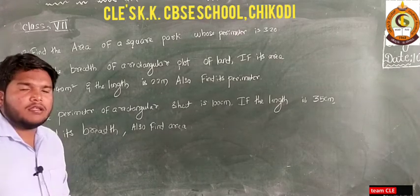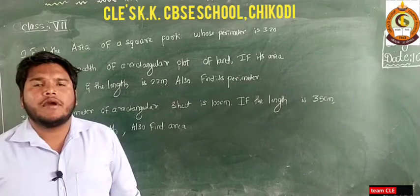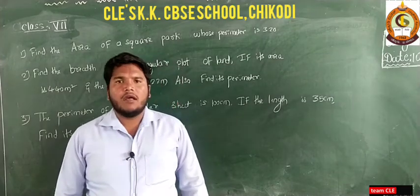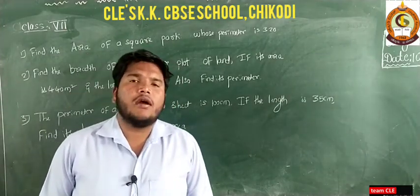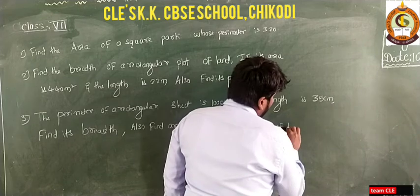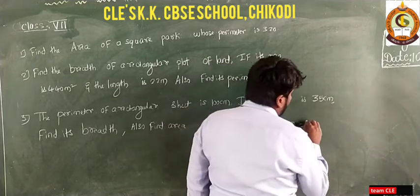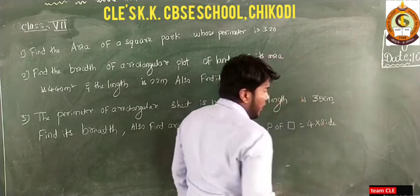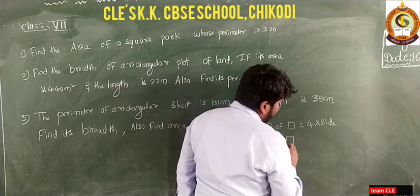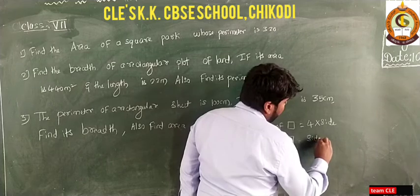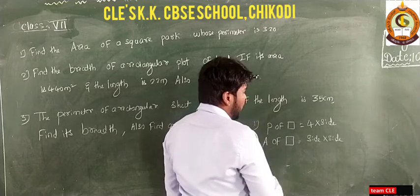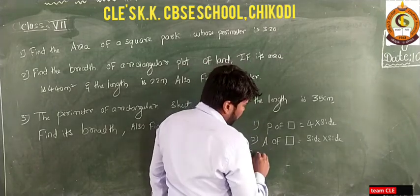Welcome back, Class 7 students. In the last class we discussed some formulas of perimeter and area. We learned the perimeter of square, which is four times the side, and the area of square, which is side into side. So we have learned these two formulas: perimeter of square and area of square.